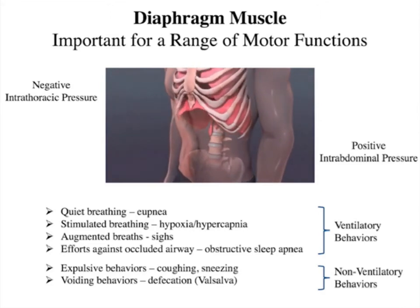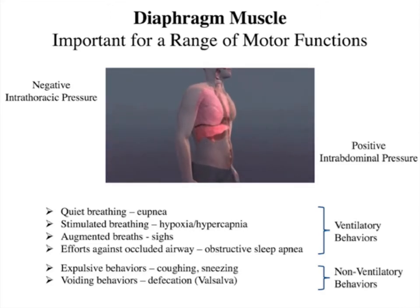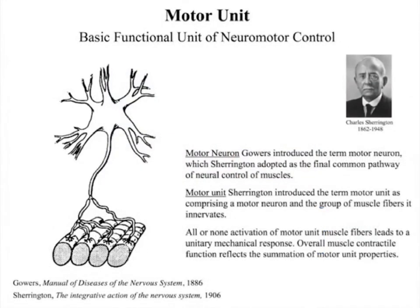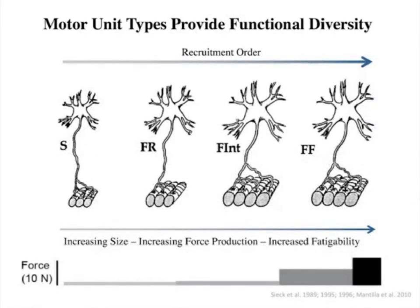The diaphragm also contributes to non-respiratory activity such as swallowing and vocalization. In evolution, the diaphragm is unique to mammals and its physiological importance cannot be argued. In all skeletal muscles, including the diaphragm, the final common output of neural control is the motor unit. Charles Sherrington coined the term 'motor unit' comprising the motor neuron and the muscle fibers it innervates. When the motor neuron is activated, the resulting action potential propagates along axonal branches to activate all muscle fibers of the motor unit in an all-or-none fashion. The motor neuron comprising the motor unit is central to our talk today.